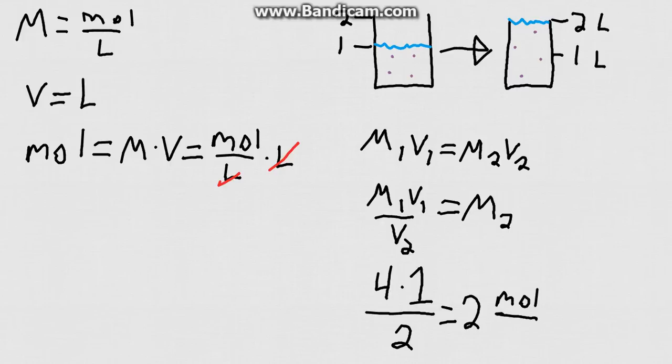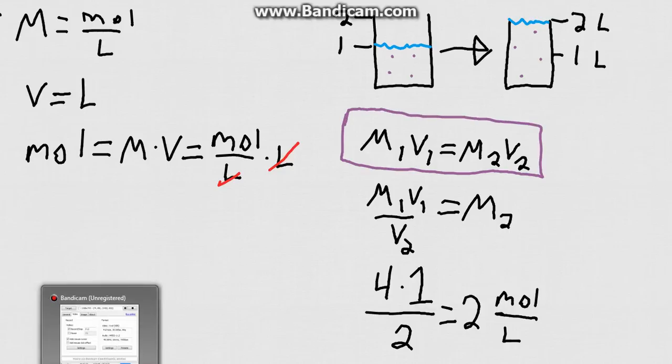That would be how you would find your molarity in this new diluted problem. It's a pretty simple concept, you just go M1V1 equals M2V2, which is this equation right here, and you can rearrange it to solve for any of those variables. Hopefully that helps, and I'll see you guys at the next lesson.